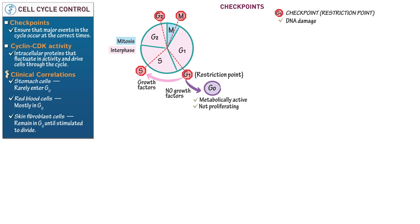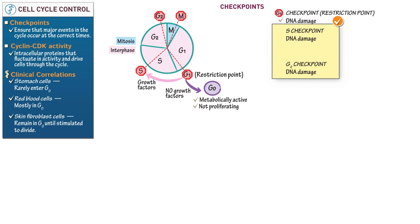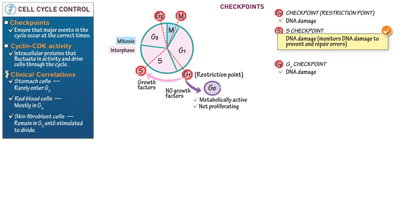Indicate that the S and G2 checkpoints are also DNA damage checkpoints. The S checkpoint checks for DNA damage before DNA replication begins, and the G2 checkpoint checks for DNA damage before mitosis begins. The S checkpoint monitors DNA throughout the replication process to prevent and repair errors. We draw the S checkpoint in the middle of the S phase because it acts throughout the duration of this phase — before, after, and during replication.